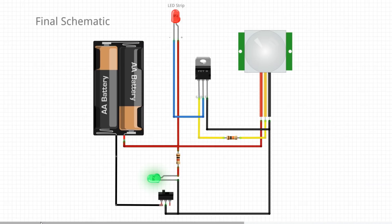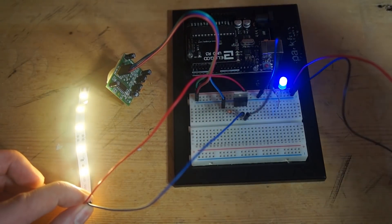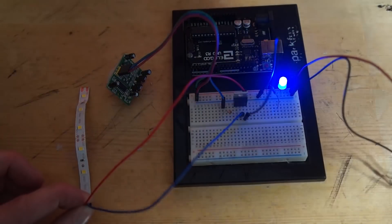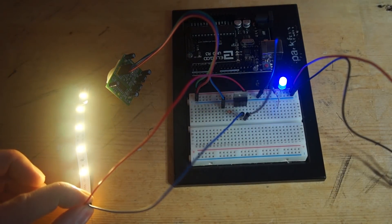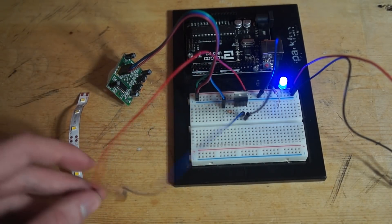Okay, now let's build the prototype and test it out. Here you can see me move my hand in front of the motion sensor and the LED strip lights up for a few seconds. Also notice that the blue LED light is on as long as the circuit is activated.